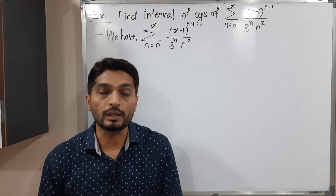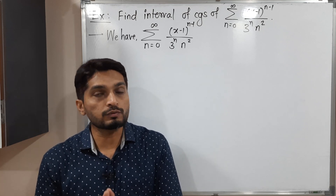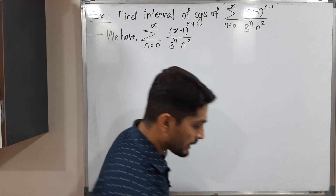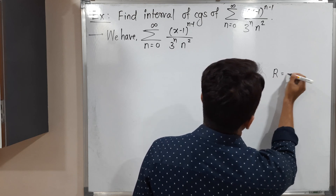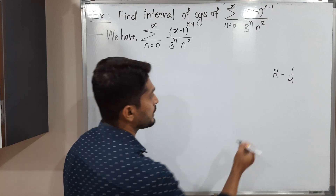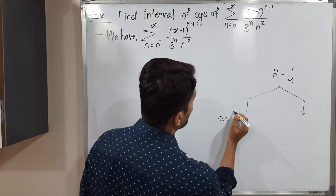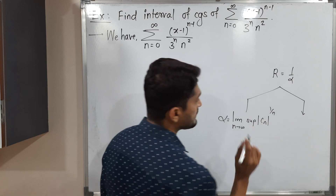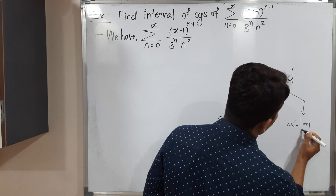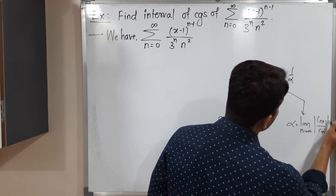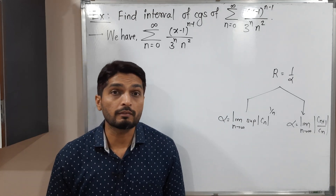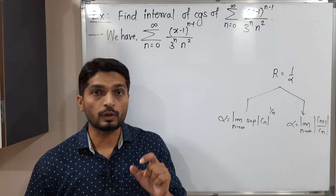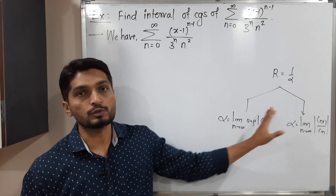To find the interval of convergence, we need its radius of convergence. So our first target is to find the radius of convergence. The formula is r equals 1 by alpha, where alpha can be found in two ways. Alpha equals limit n tends to infinity of supremum of |cn|^(1/n), or alternatively, limit n tends to infinity of |c_(n+1) / cn|. We find alpha and its reciprocal is the radius of convergence.